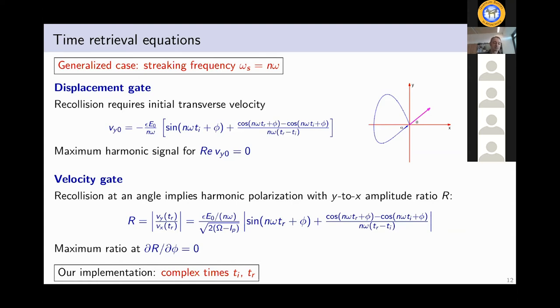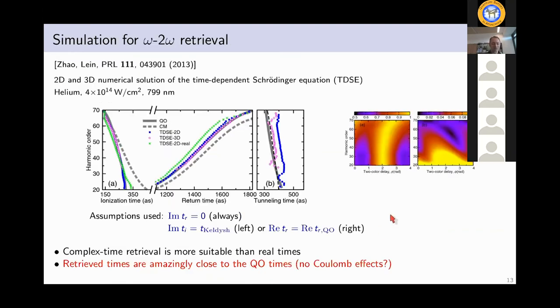And that gives you then two equations to retrieve the two times. But actually in our implementation, we find that it's better to use these equations with complex times. So ti and tr are now complex, which then actually means that it's really four equations. And if we have two observables and four equations, we need to make some extra assumptions. But that's not a big problem. We set the imaginary part of the return time to zero because we know it's small. And one other assumption that we make is that we set the imaginary part of the ionization time to the Keldish time, which is a simple formula that we can just plug in.